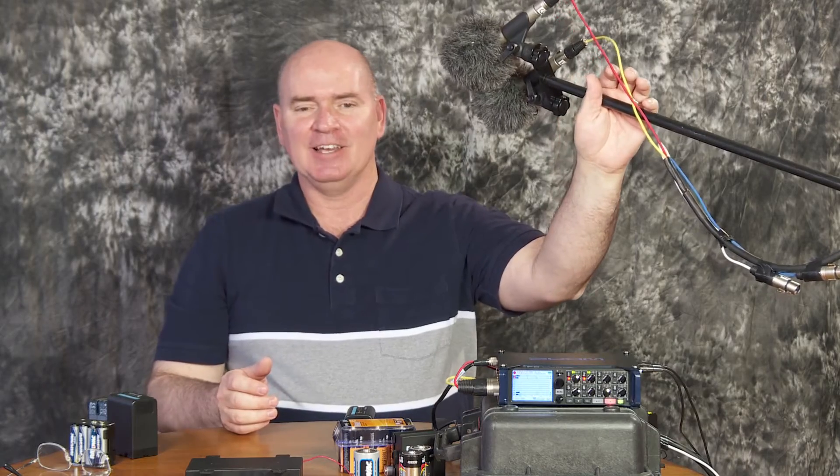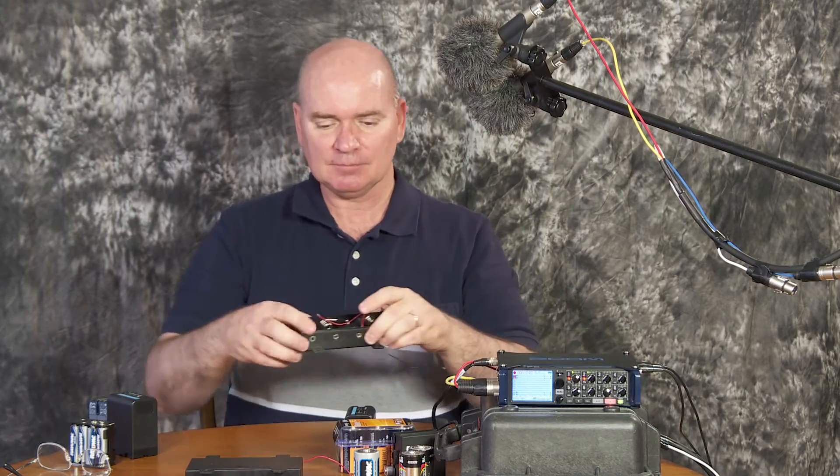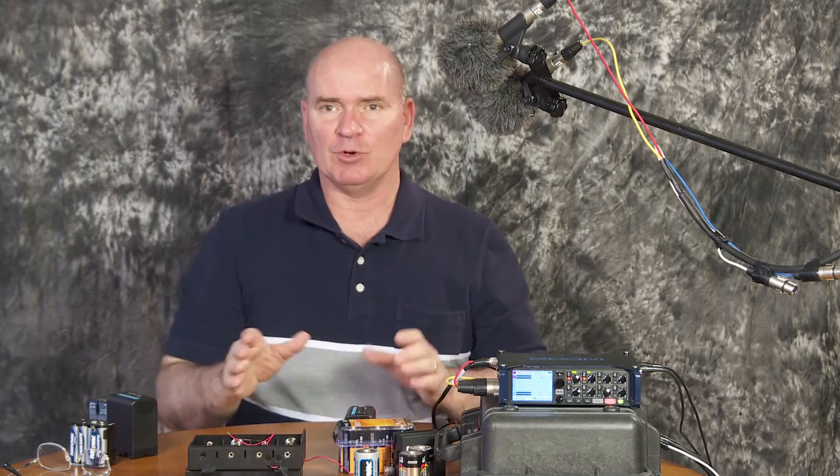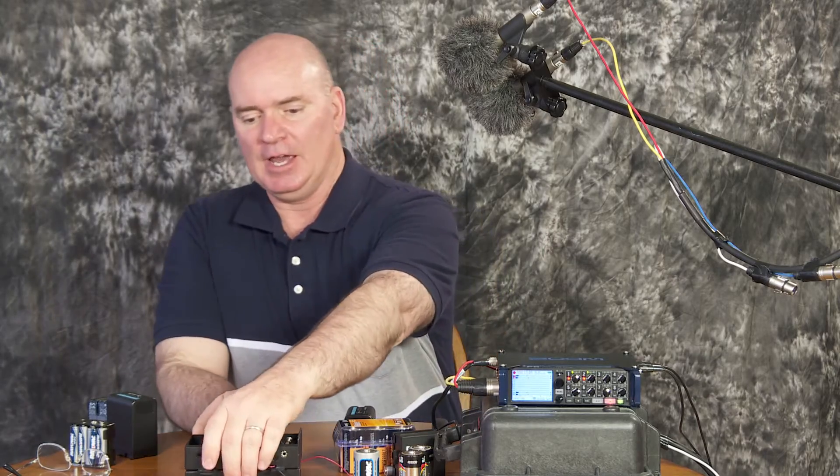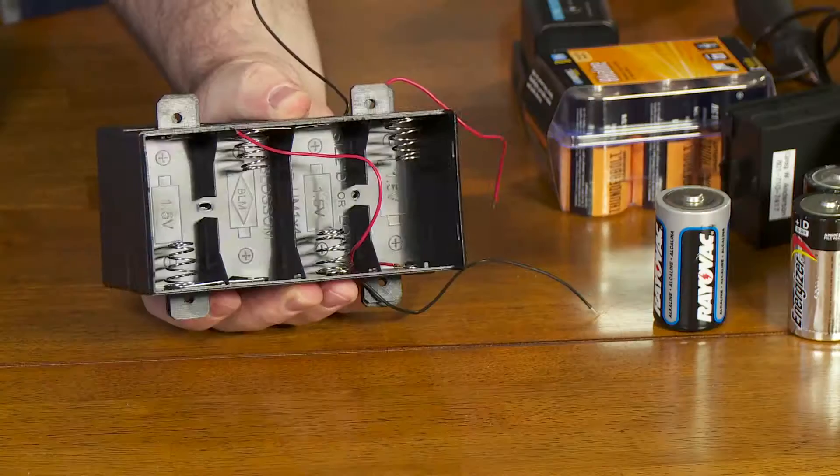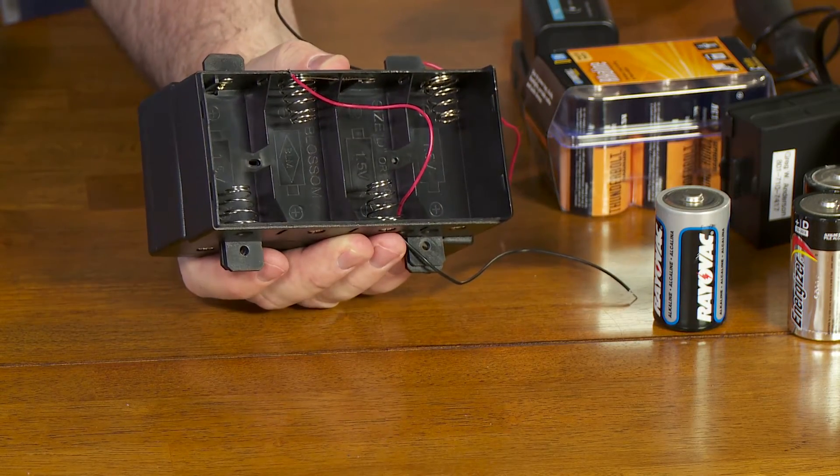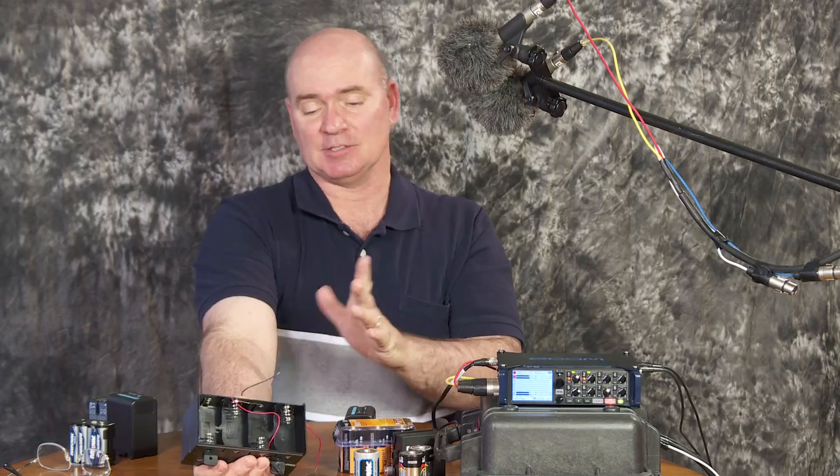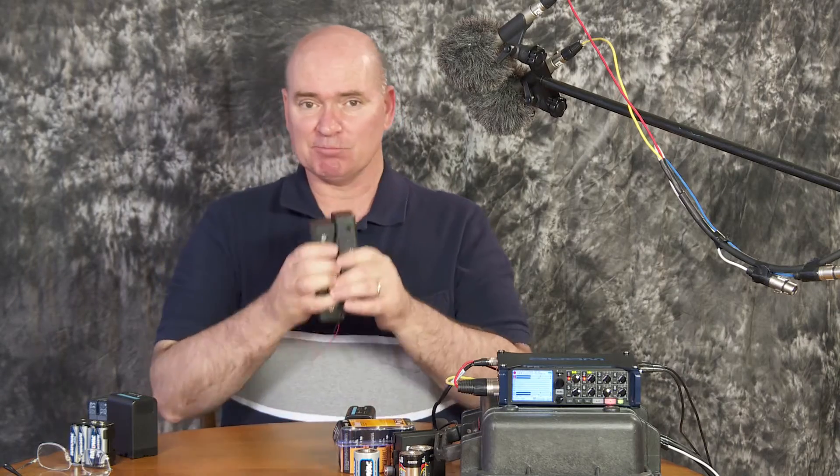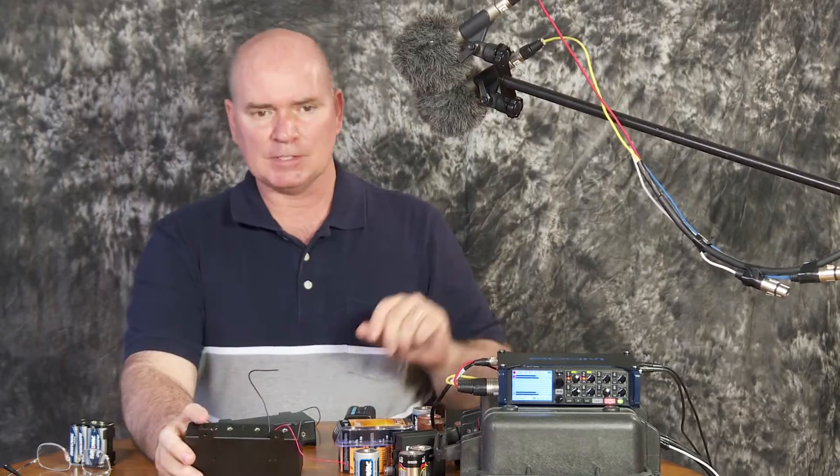Except that it only holds four D sized batteries, and well, you need eight to get up to the 12 volts needed to run the F8. So what I decided is to go ahead and get two of them, and I'm going to attach them to each other and wire these two battery packs to each other in series. And that is going to give me the battery pack that I need to run the Zoom F8 using nothing but D sized batteries. So let's just put this together really quick and show you what it can do.